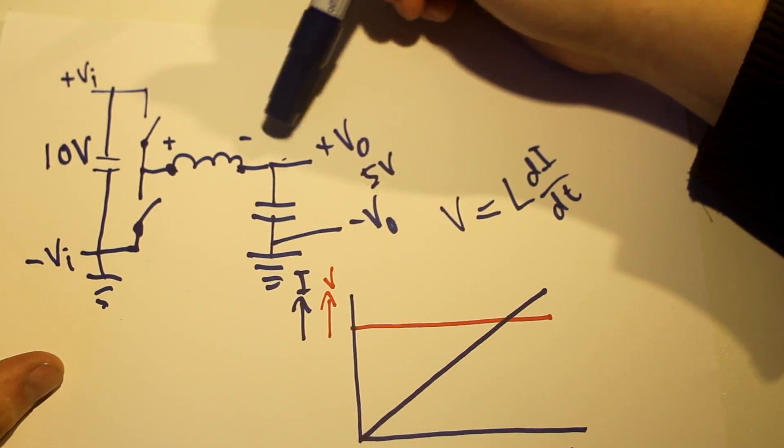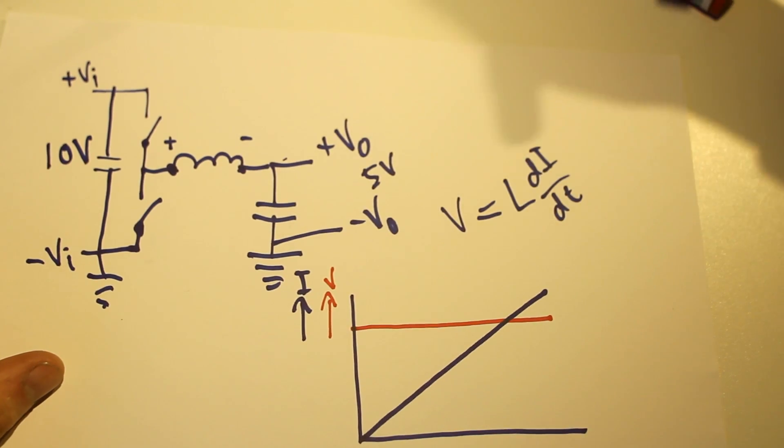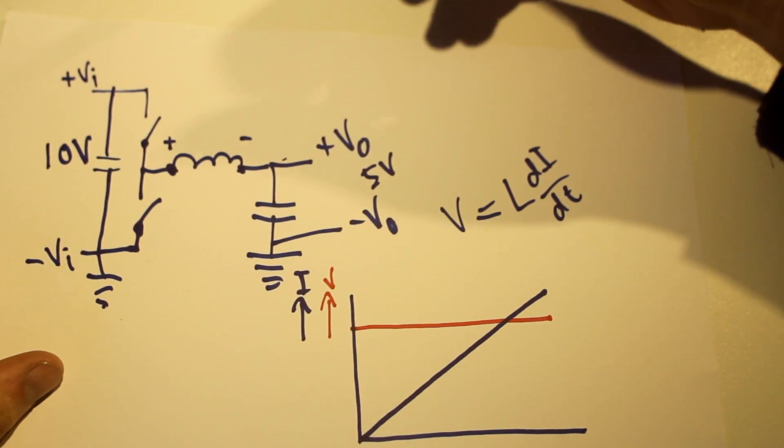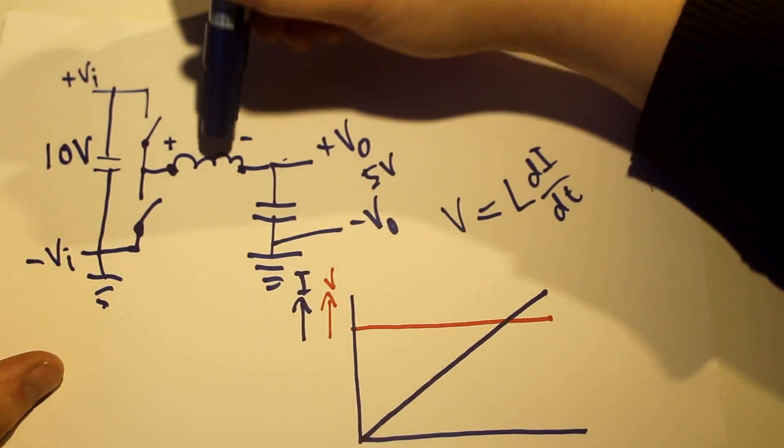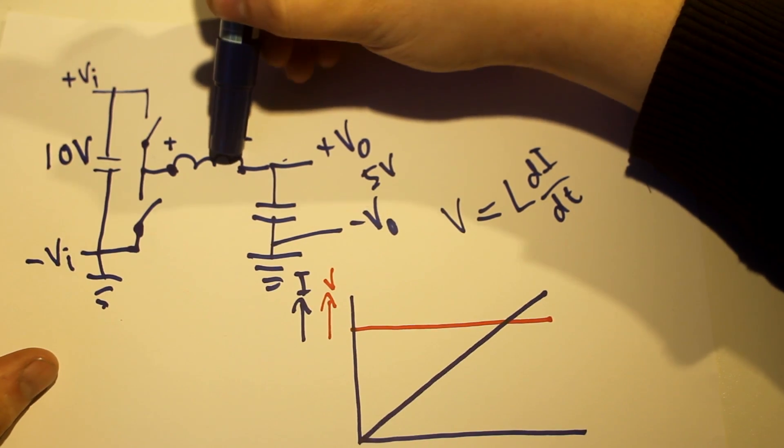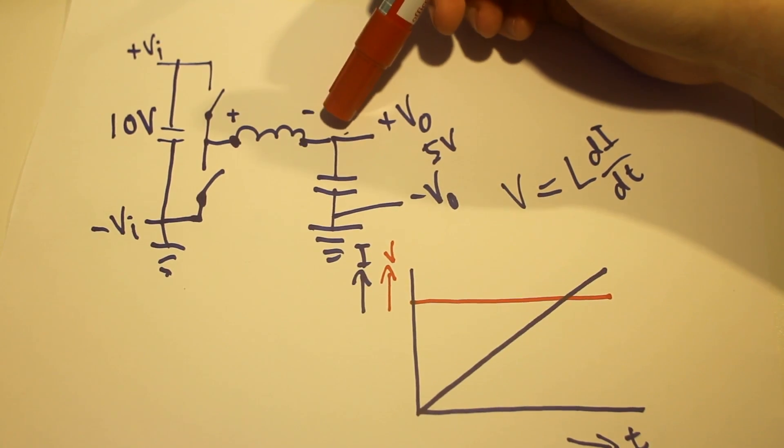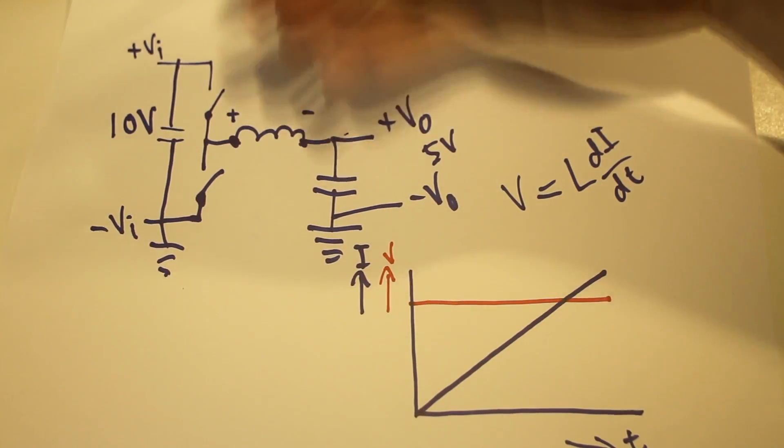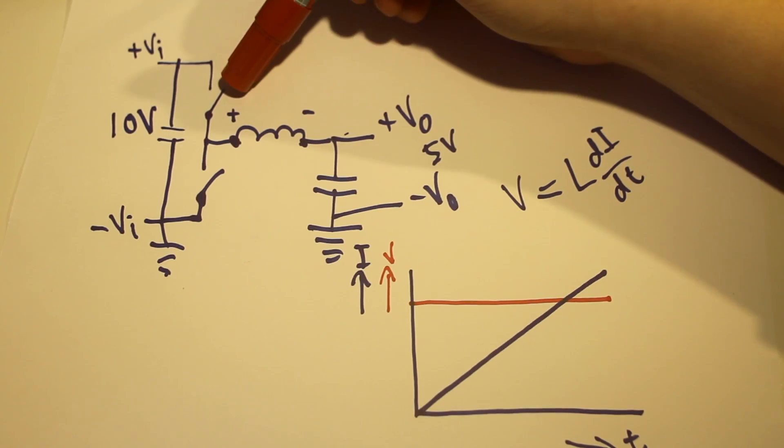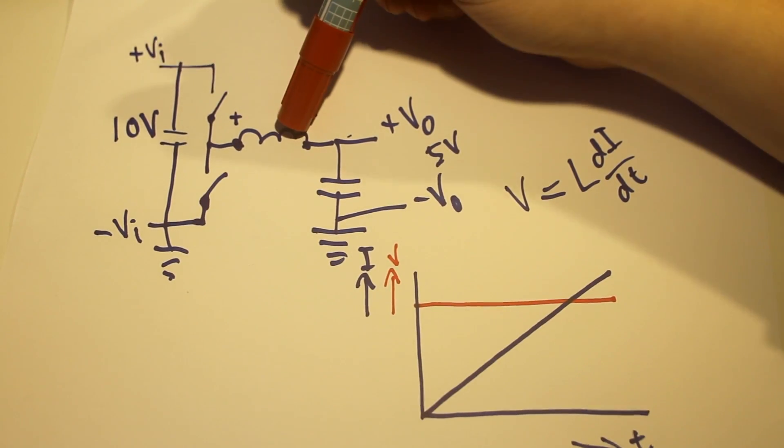Alright? Current keeps increasing and keeps increasing. Gets kind of high, and at some point there is a lot of current going through this inductor. So the current is really high right now. And we want to do something about it. So first of all, let's just stop this madness. Let's just open this switch to make sure the current doesn't go up again.